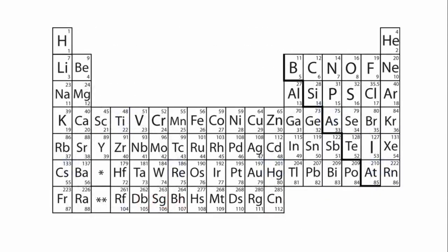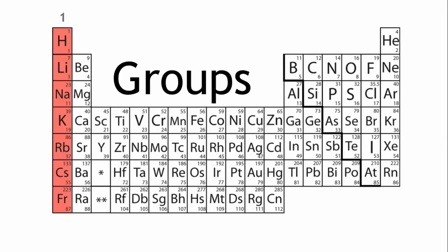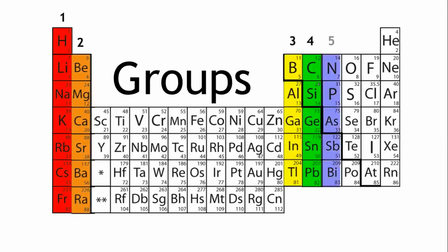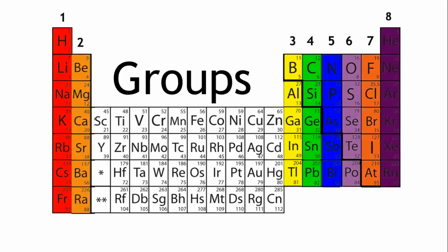The columns going down from top to bottom are the groups. Elements in the same group also have something in common. Elements in the same group have the same number of electrons in their outermost shell. The electrons in the outer shell are called valence electrons. This means that these are the electrons available for reactions and bond formation.